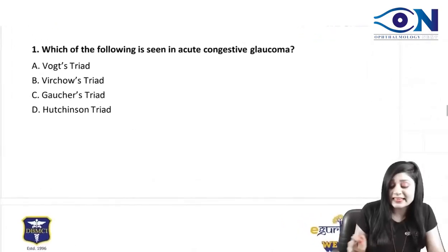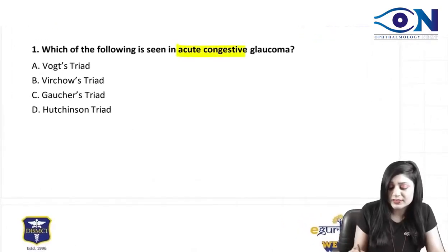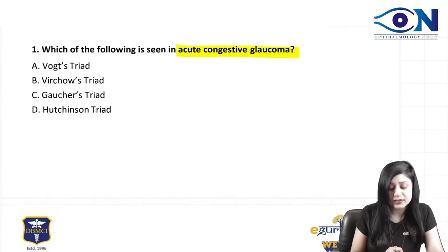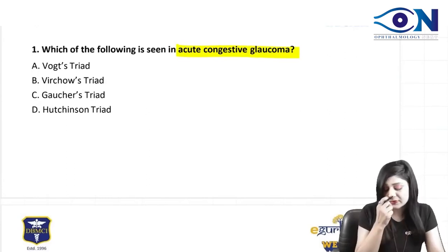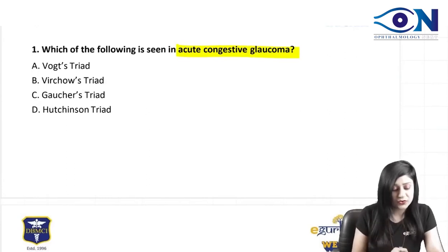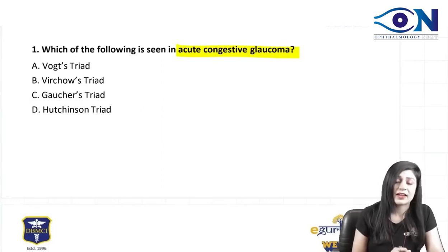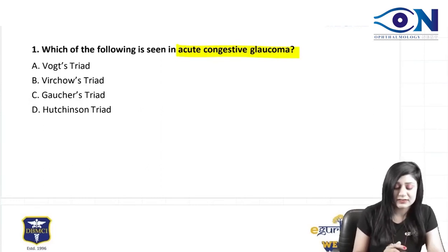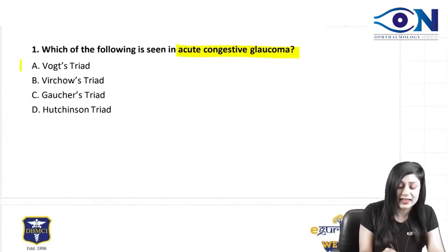Which of the following is seen in acute congestive glaucoma? Simple question — which triad? You can see they have given you four triads: the Vox triad, Vachos triad, Gotchers triad, and Hutchison triad. So which triad is seen in acute congestive glaucoma?